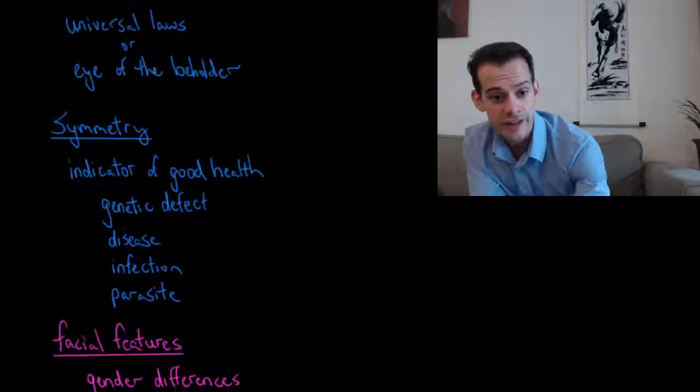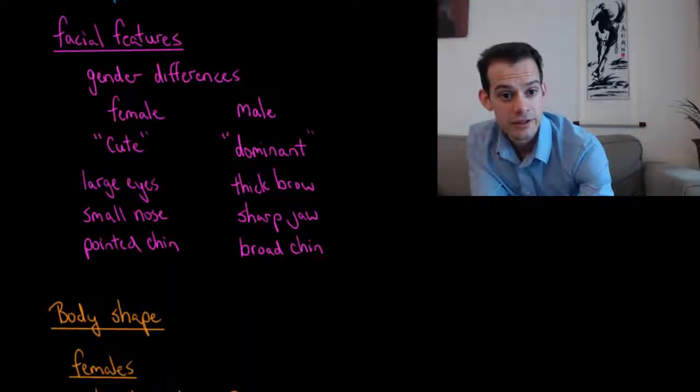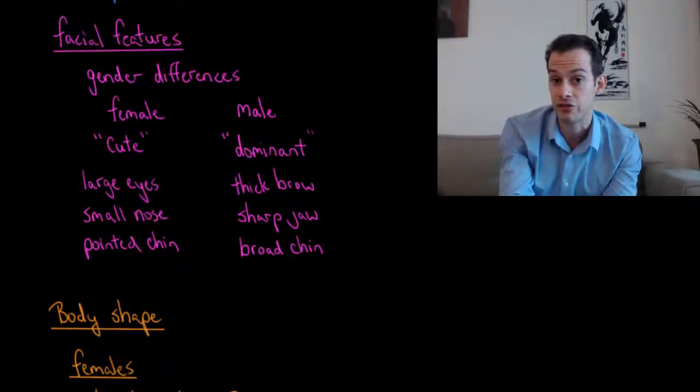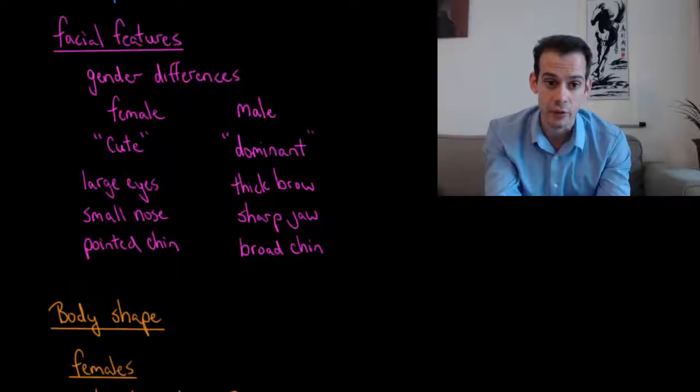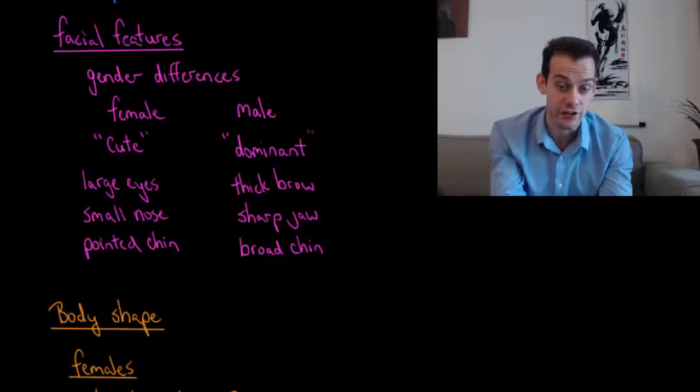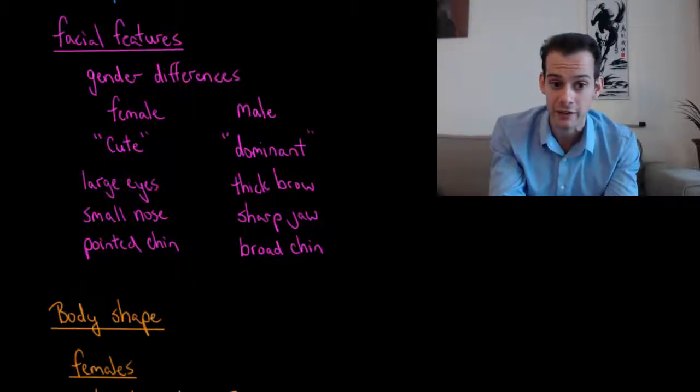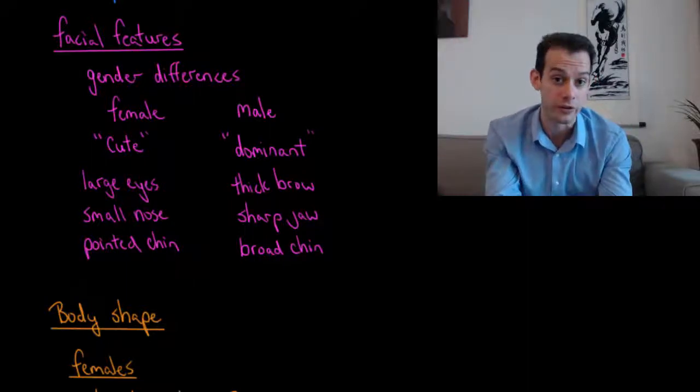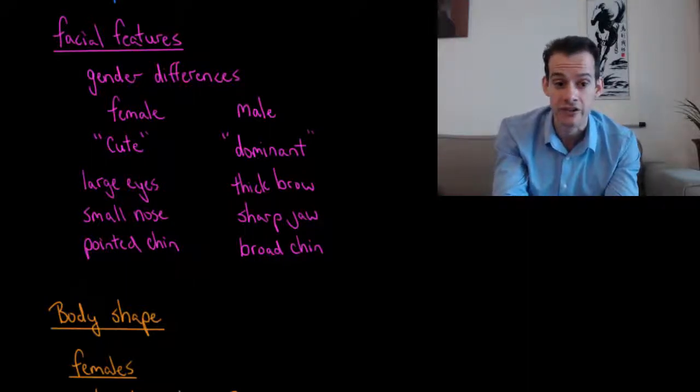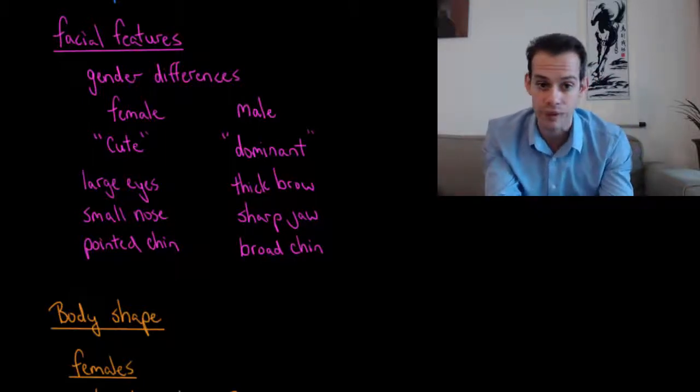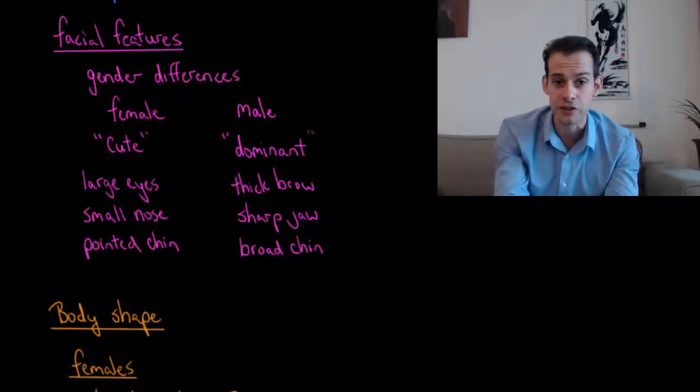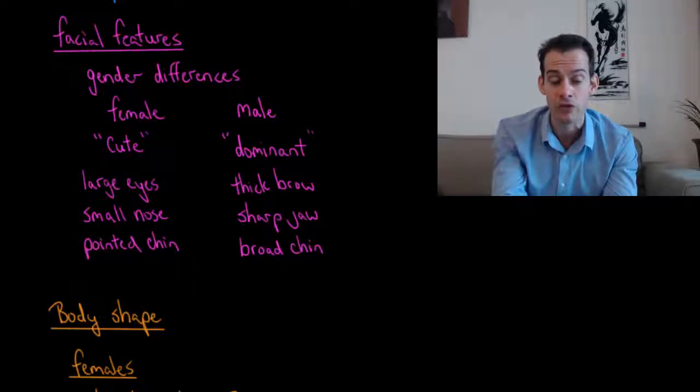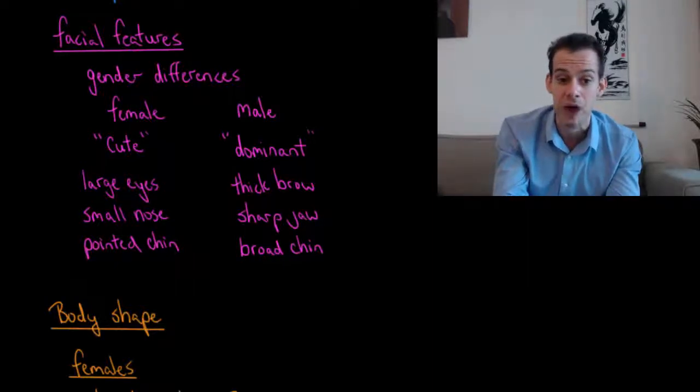Now symmetry also matters in our facial features, but there are also gender differences in which facial features are considered to be attractive. So in females, the facial features that are often considered to be more attractive are those that we might consider to be cute. Things like large eyes, a small nose, and a pointed chin are often considered to be attractive in women. Whereas in men, facial features that are more attractive are often those we might consider to be more dominant. Things like a thick brow, a sharp jaw, and a broad chin.